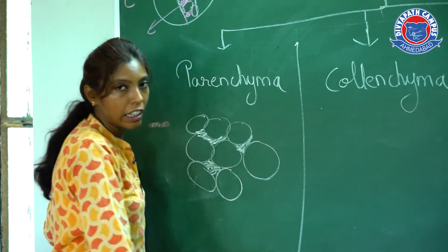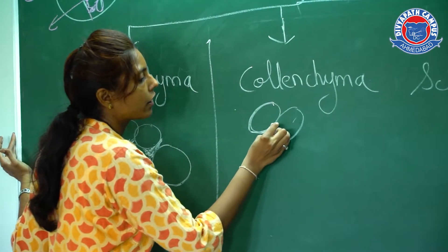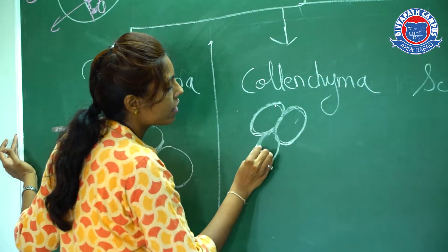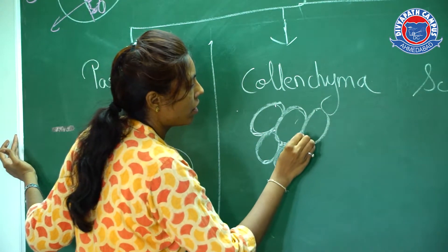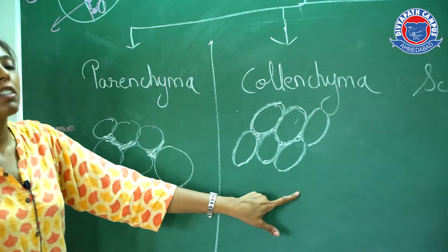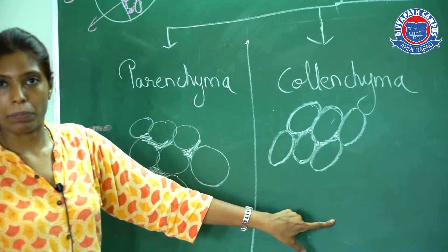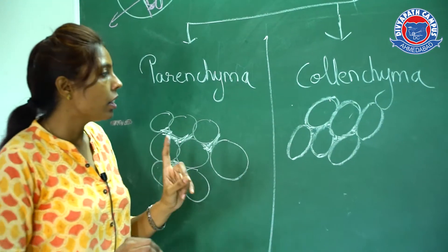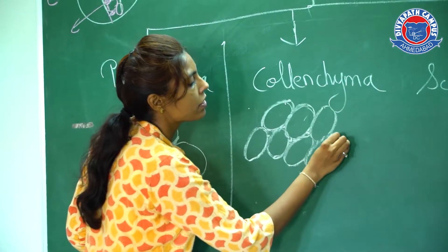If I talk of colenchyma, in that case the cells are elongated with a thickening and very less intercellular space is present between them. The intercellular space is very less because its main function is flexibility. It is mainly present in the stem part because the stem has to be flexible. These are also living cells and vacuoles are also present in these cells.